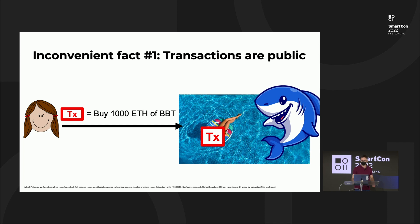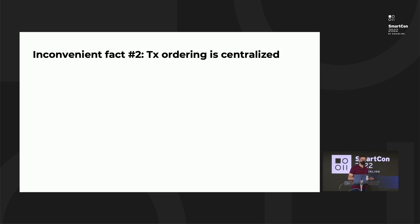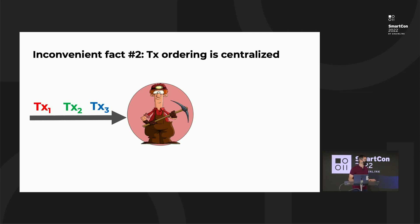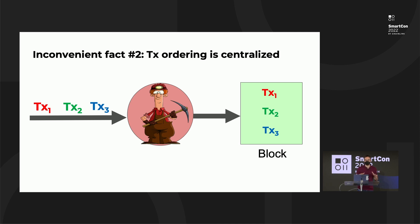Number two is the fact that transaction ordering is centralized, despite the fact that it's operating in what is supposed to be a decentralized system. Suppose a series of transactions enters the mempool. At some point, they're taken up by a validator or miner, and it's the job of the validator to encapsulate them in a block. The thing is, the validator gets to decide unilaterally how those transactions are ordered. It may have seen the transactions in the order 1, 2, 3, but it's not obligated to retain that order — it could reorder the last two transactions.